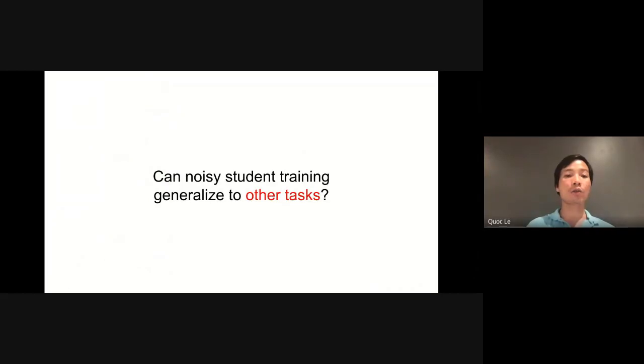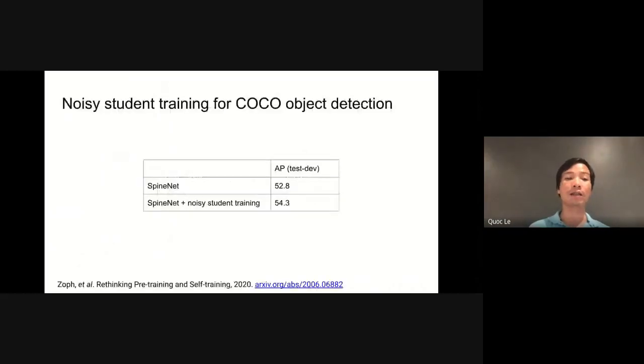So far, we have demonstrated that noisy student training can improve accuracy and robustness on ImageNet classification. But can this method be used for other tasks? The answer is yes. Here, we use noisy student training for the COCO object detection dataset. The baseline SpineNet model achieves 52.8 AP accuracy. Using noisy student, we can achieve 1.5 AP gain on top of this baseline to achieve 54.3 AP on this dataset.